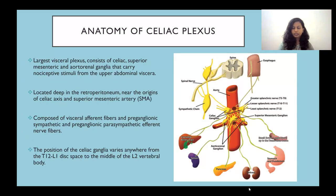The anatomy of the celiac plexus: it is the largest visceral plexus, consisting of the celiac, the superior mesenteric, and the aortorenal ganglia that carry nociceptive stimuli from the upper abdominal viscera. It is located deep in the retroperitoneum, near the origins of the celiac axis and superior mesenteric artery. It is composed of visceral afferent fibers and preganglionic sympathetic and preganglionic parasympathetic efferent nerve fibers. The position of celiac ganglia varies from T12 to L1 down to the middle of the L2 vertebral body.